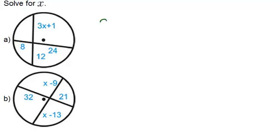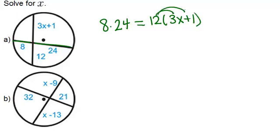we'd have 8 times 24, because those are two segments on the same chord, equals 12 times 3X plus 1. And don't forget you're going to have to distribute the 12 in order to solve this correctly.